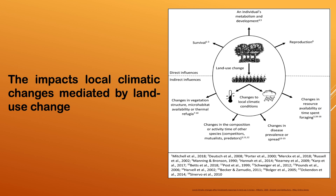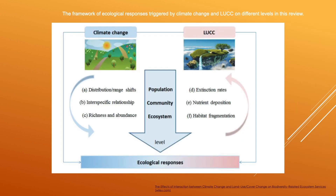The diagram illustrates local climatic changes mediated by land use changes. Land use change has direct influences on survival, individual metabolism, development and reproduction. Indirect influences include changes in vegetation structure, microhabitat, availability of thermal refugia, changes in competition or activity time for other species such as competitors, mutualists and predators, change in disease prevalence or spread, and change in resource availability or time spent foraging.